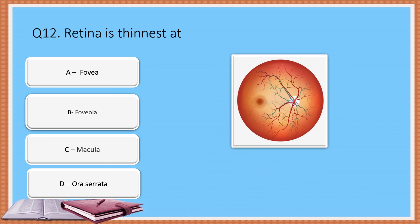Next question: Retina is thinnest at — Option A: Fovea. Option B: Foveola. Option C: Macula. Option D: Ora serrata. The correct answer is Option D: Ora serrata.